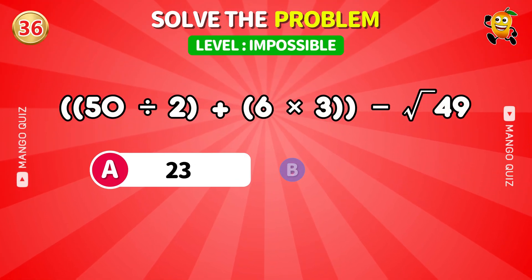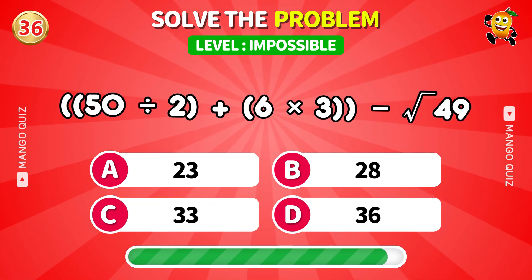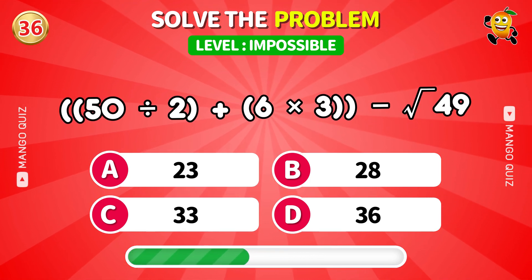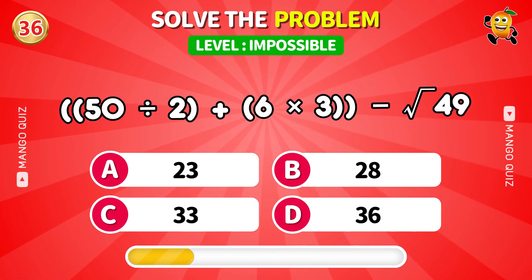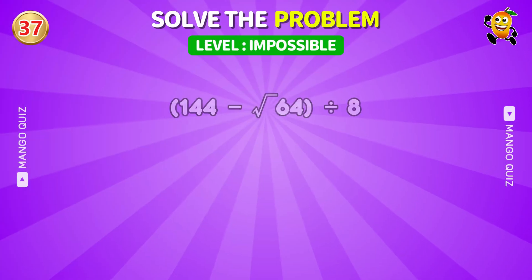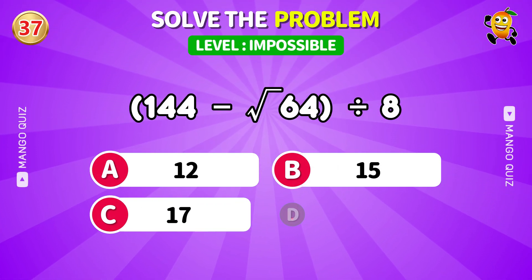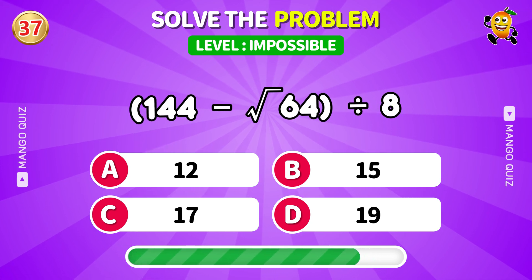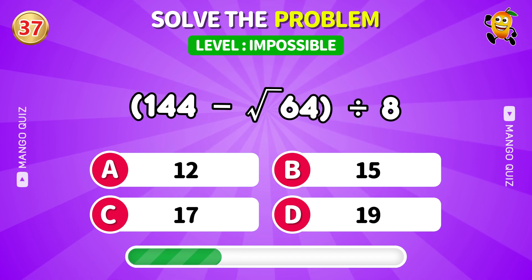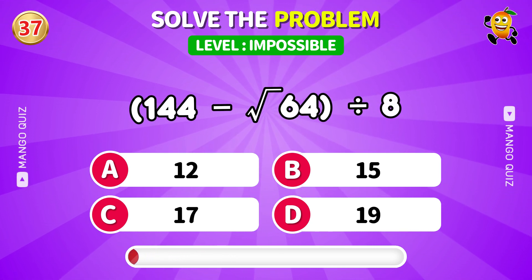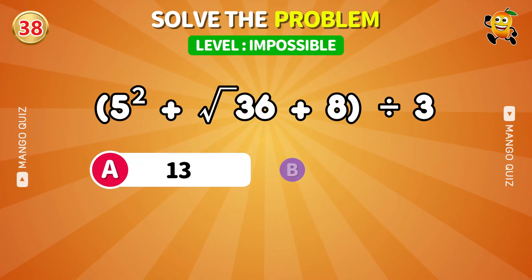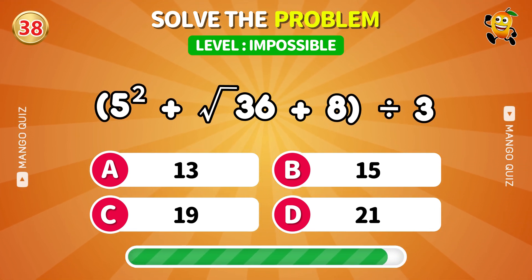50 divided by 2 plus 6 times 3 then minus root 49. Answer: 36. Next: 144 minus root 64 divided by 8. Answer: 17. Next: 5 squared plus root 36 plus 8 then divide by 3. Answer: 13.